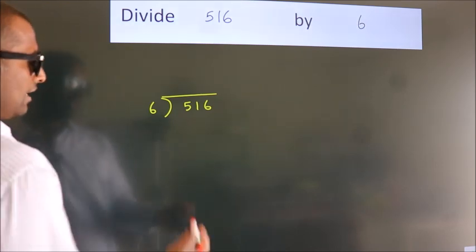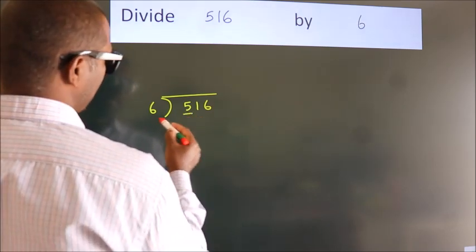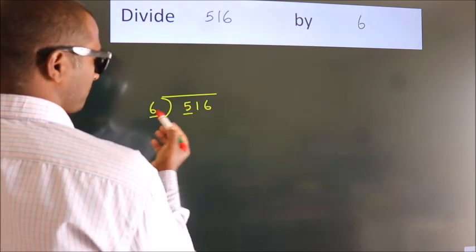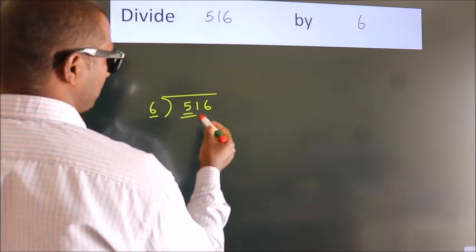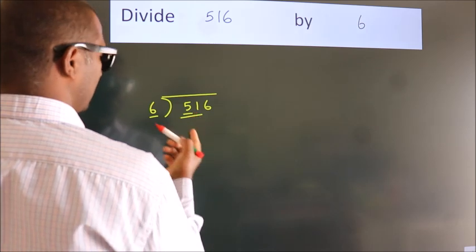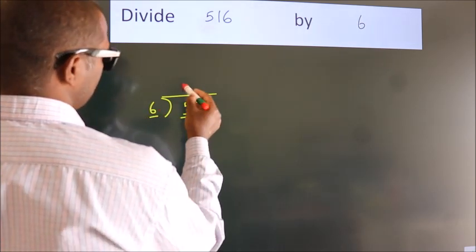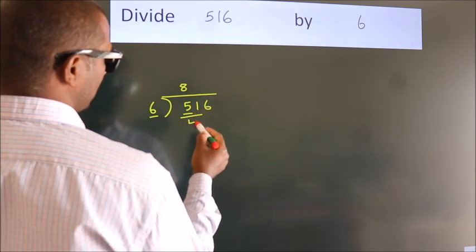Next, here we have 5, here 6. 5 is smaller than 6, so we should take 2 numbers: 51. A number close to 51 in the 6 times table is 6 times 8, which is 48.